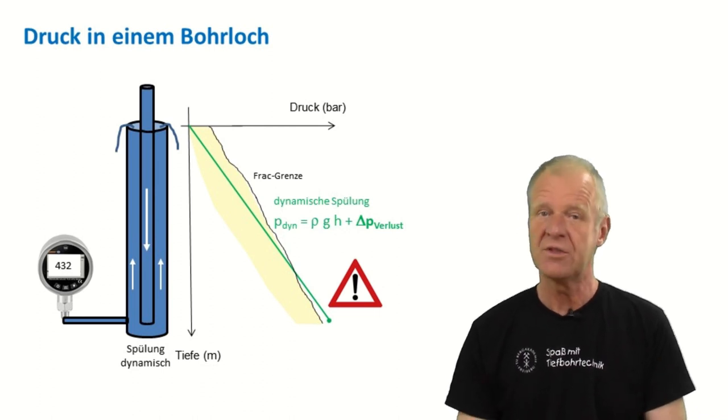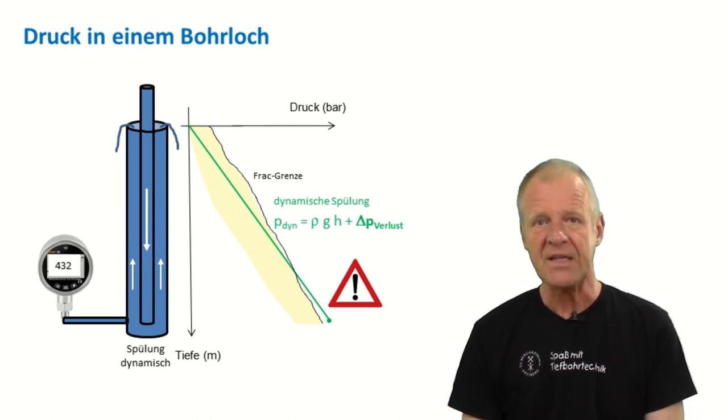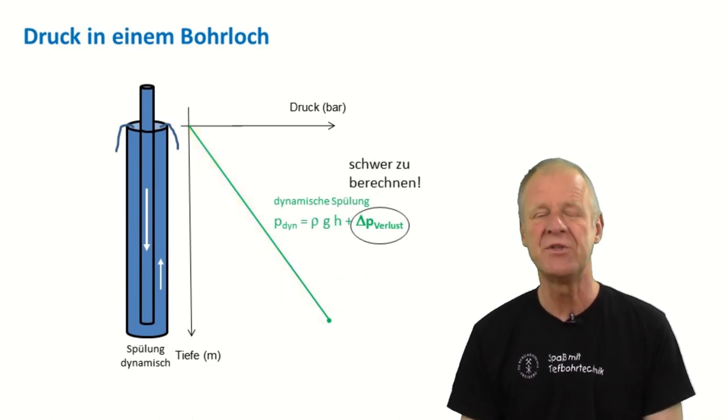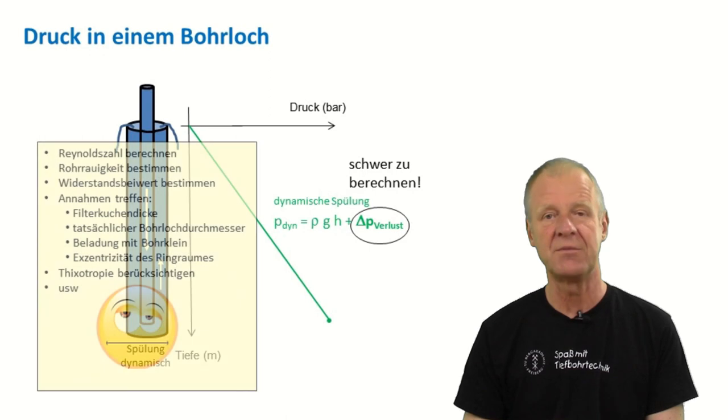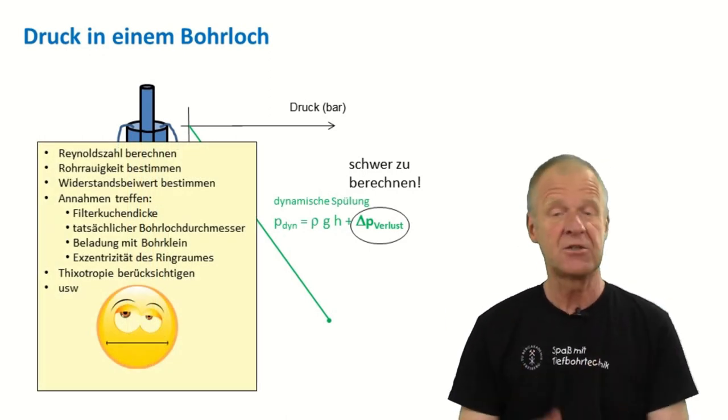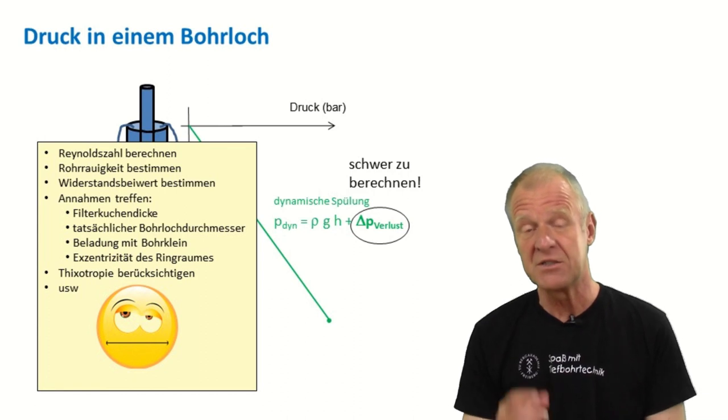Of course, there's a formula to calculate this dynamic pressure component, but such calculation is quite complex. First, you have to calculate the Reynolds number, estimate the roughness of the borehole walls, estimate the thickness of the filter cake.